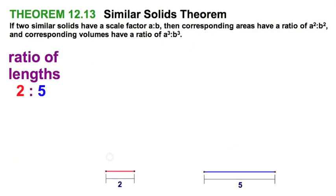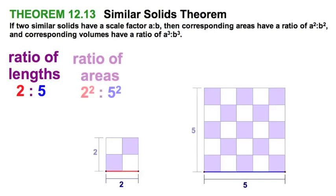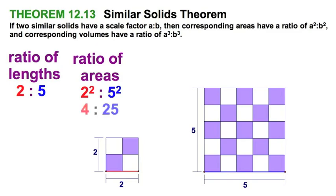Let's explore the similar solids theorem now. I'm going to start with these two segments in the ratio of 2 to 5 respectively, that's the red to the blue. And I'm first going to generate squares like we did in chapter 11. And you can see now the ratio of the areas. I could count up the squares, but it's clearly this is a 2 by 2, 5 by 5. The ratio is 4 to 25.